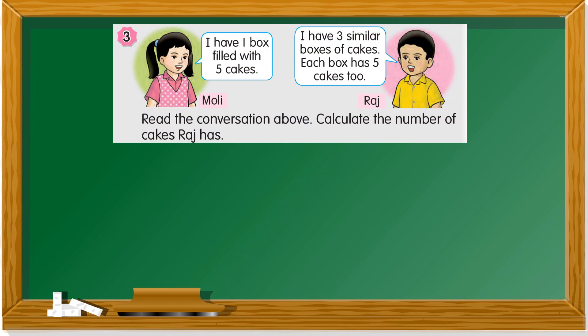Let's take a look at the third question. Molly says, I have one box filled with five cakes. And Raj says, I have three similar boxes of cakes. Each box has five cakes too. We need to calculate the number of cake Raj has. Let's take a look at the keywords. He said, he has three similar boxes of cakes. Similar with Molly. One box is filled with five cakes. Each box has five cakes. We need to calculate the number of cake Raj has. The keyword each is multiplication.